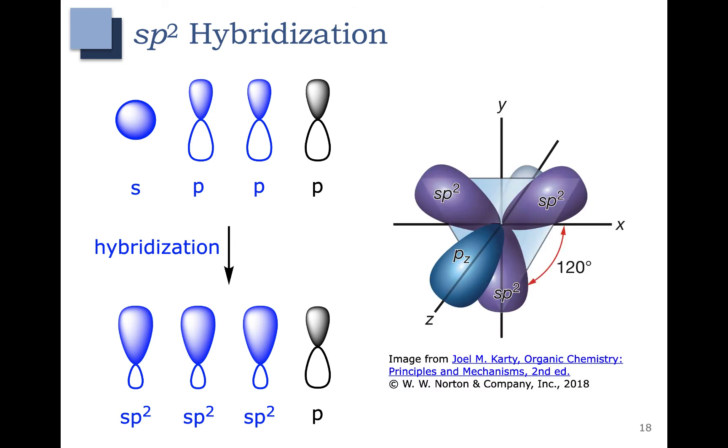This is what they look like when you put them all together. Here are the sp2 hybrid orbitals in purple and here's the p orbital. You can see both lobes of the p orbital here. The sp2 orbital, similarly to the sp3 orbital, is lopsided.